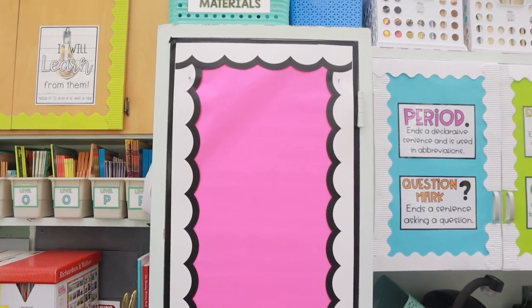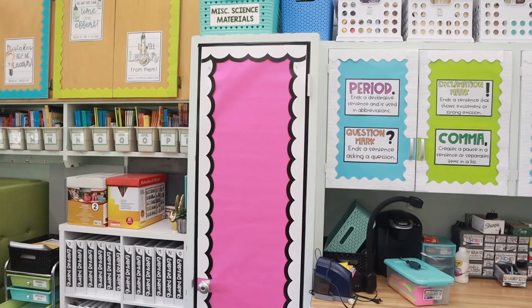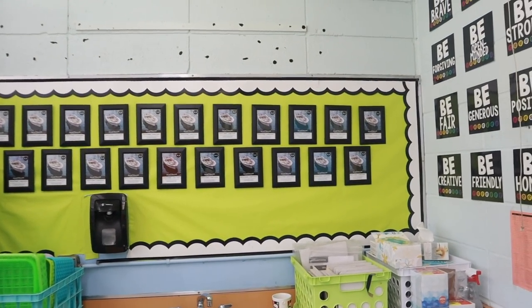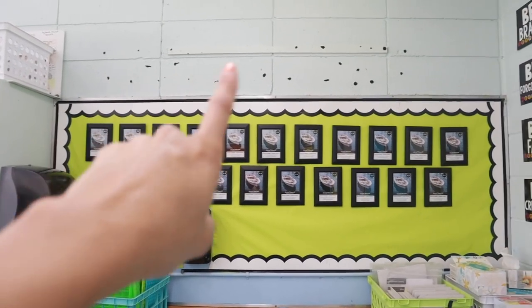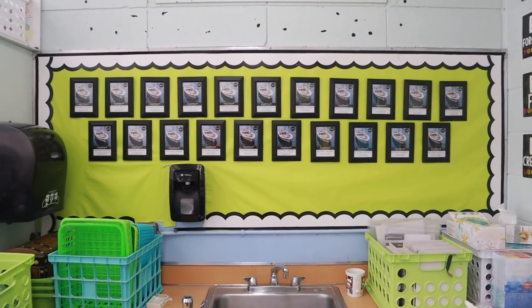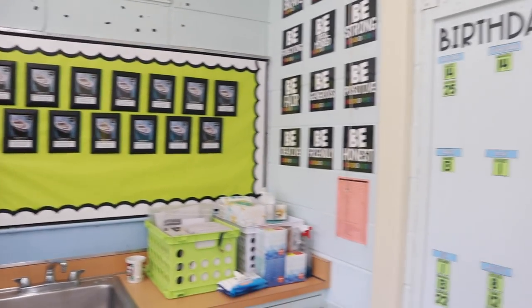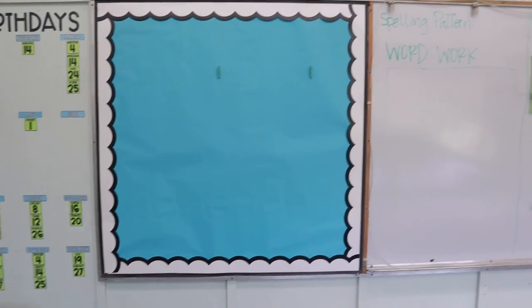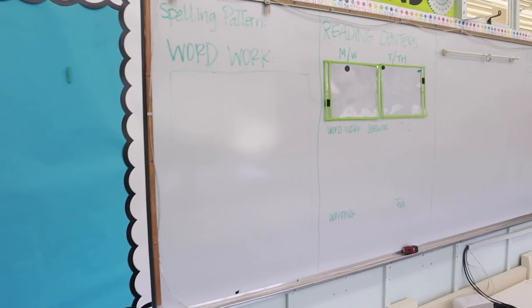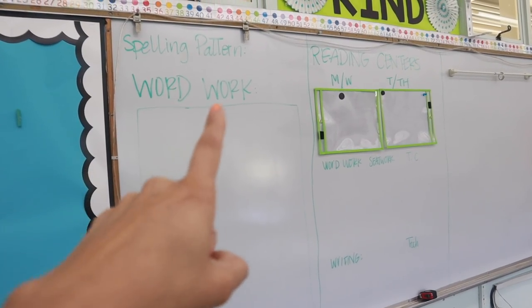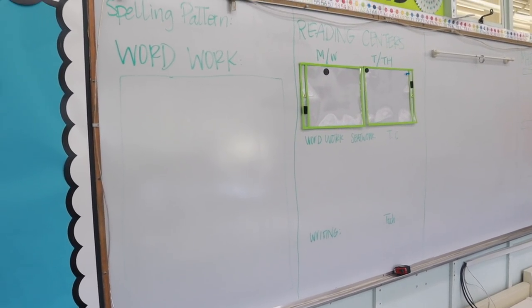This right here is going to be my class jobs board. So after I set that one up, I will walk you through how that is going to function. Moving over here, I already hung up all of these picture frames — just from Dollar Tree. I'm going to eventually make a sign that says something like 'future world leaders' or 'future world changers' up there. My birthdays aren't going to change. This is going to be my reading bulletin board — anchor charts and things that we're learning in reading. I have drawn out this whiteboard space so I know how I'm going to set it up, and I have made all of my titles already on my Cricut, so they're all ready to go.